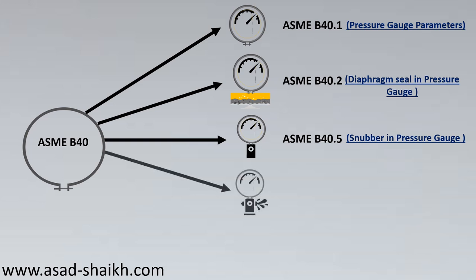The next part is ASME B40.6, which covers the gate saver — also referred to as a pressure limiting valve. This specifically deals with protecting the pressure gauge in high-pressure applications. For example, if a pressure gauge has a maximum pressure of 50 psig but the design pressure is 150 or 500 psig, you would use a gate saver. If pressure goes beyond a set limit, say 80 psig, the gate saver activates and diverts pressure away from the gauge.